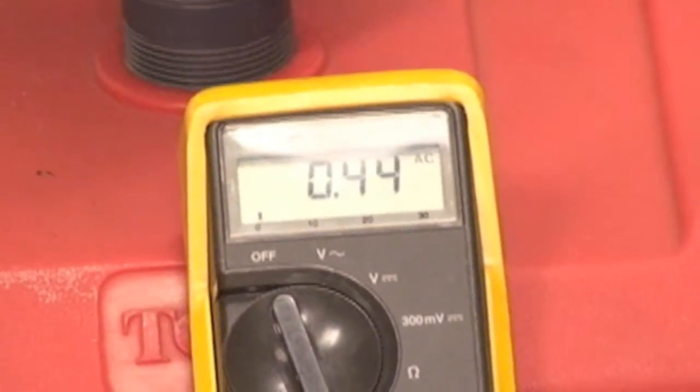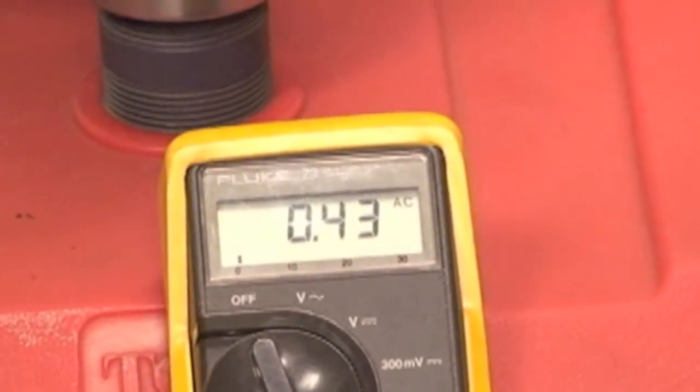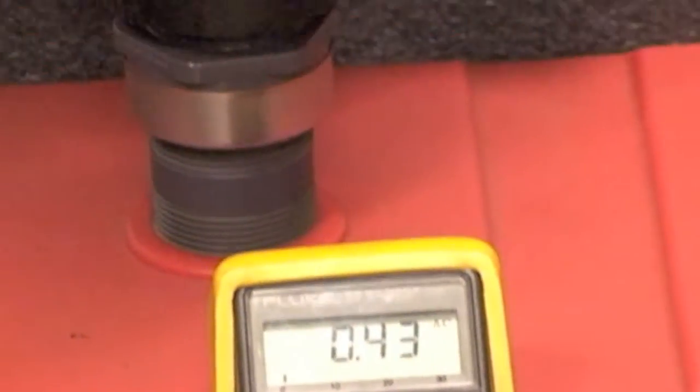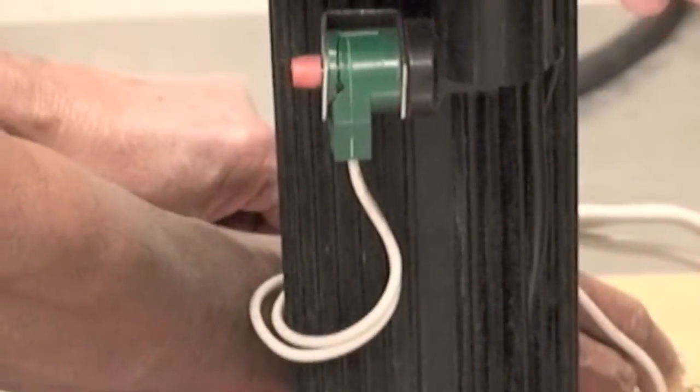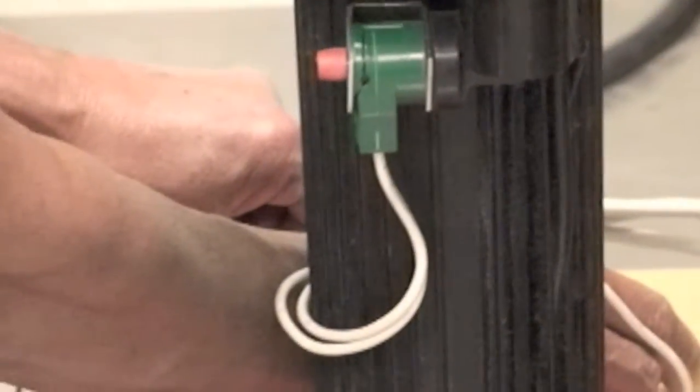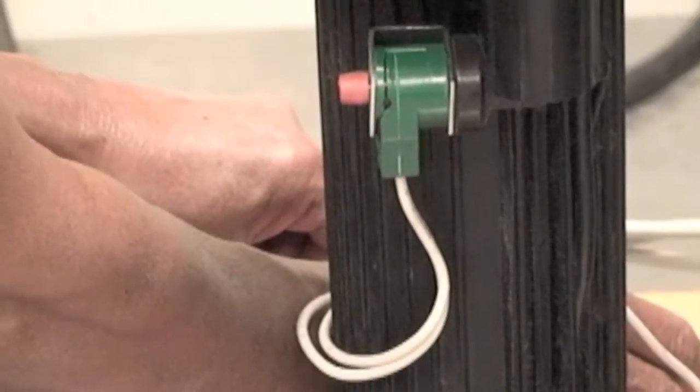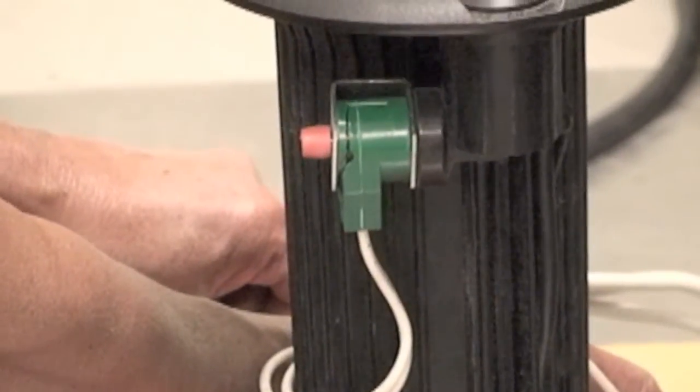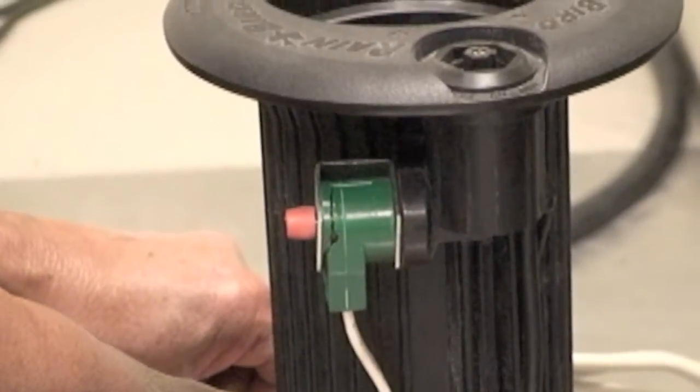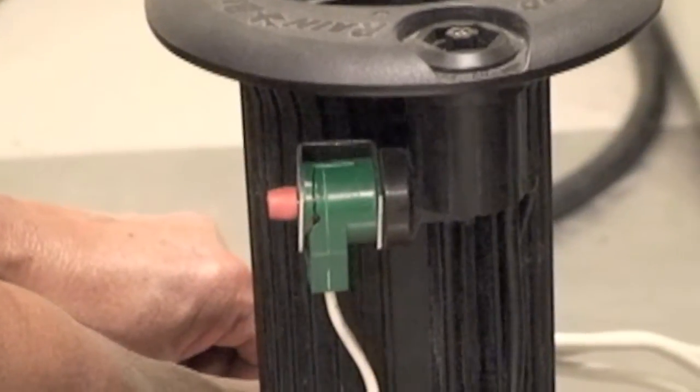The crack in this solenoid canister is going to allow moisture to get into the canister and will eventually cause the coil windings to short. The amperage is just going to get higher and higher until eventually the fuses start to blow until the solenoid gets replaced.